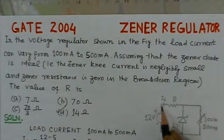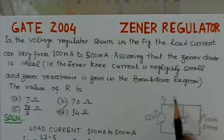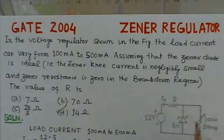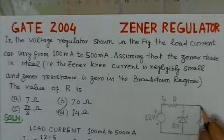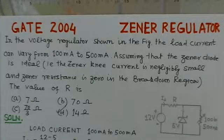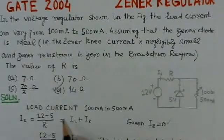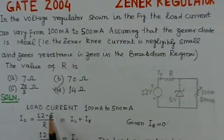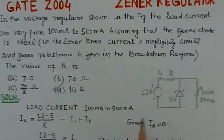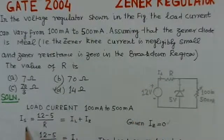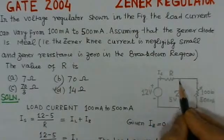The circuit is given here. This is an unregulated voltage, this is the series current limiting resistor R, and this is a Zener of 5 volts. The load resistance is between 100mA to 500mA. So the load current is between 100mA to 500mA.